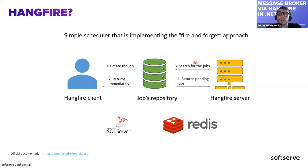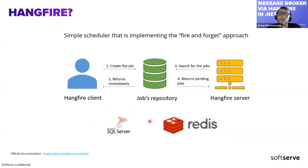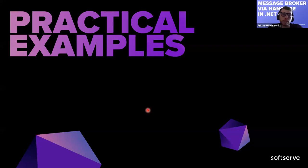Hangfire supports two technologies as a jobs repository: Redis cache, which we chose, and standard MS SQL Server. The beauty of Redis is we already used it in our application, and it offers more flexibility in auto-scaling. SQL Server is not as easily auto-scaled and costs more in terms of budget.